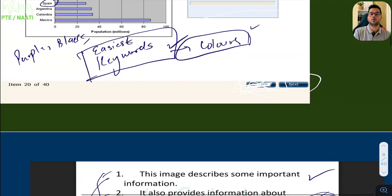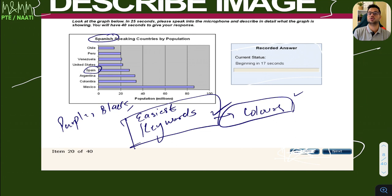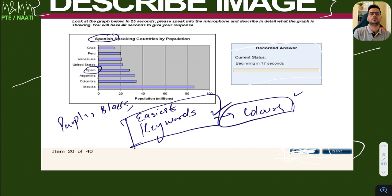You don't need fancy or difficult categories — just pick the easiest keywords and you'll get a full score in describe image. This is the only topic that works this way because it only gives marks in speaking. Do not try this approach with any other topic in the speaking module — do not compromise content elsewhere.